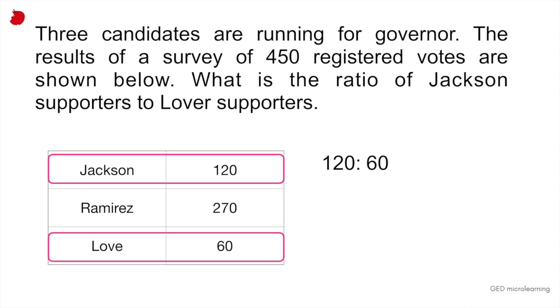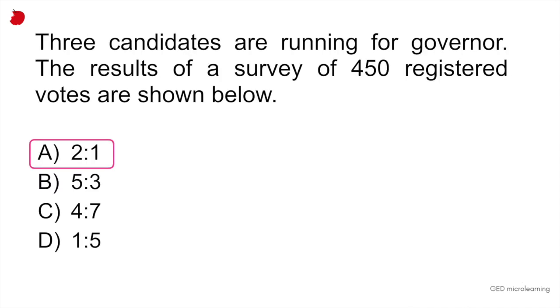In the GED, they will always ask you to reduce fractions and ratios to the simplest form. You find a common denominator between those two numbers, and then you simplify it as much as you can. In this case, the common denominator or the number that both of these numbers divide by is 60. So you would divide both sides by 60, and that gives you a 2 to 1 ratio. Answer A.